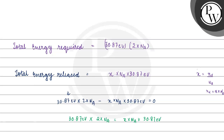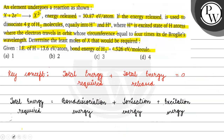Cancelling 30.87 and Nₐ from both sides, x = 2. So the minimum number of moles of X required is 2. The correct answer for this question is option B. I hope you understood it well — thank you and all the best.